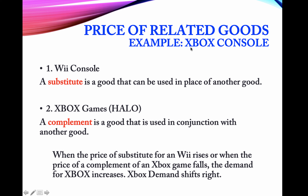The example here is the Xbox console. Wii consoles are a substitute for Xbox. If the price of the Wii falls, people are more likely to buy the Wii, and the demand for Xbox would fall. So these are substitute related products.